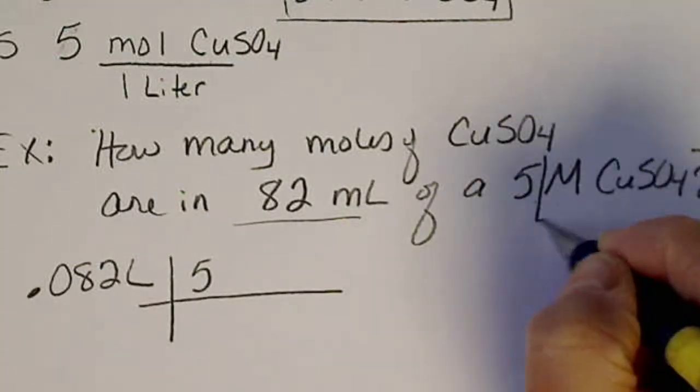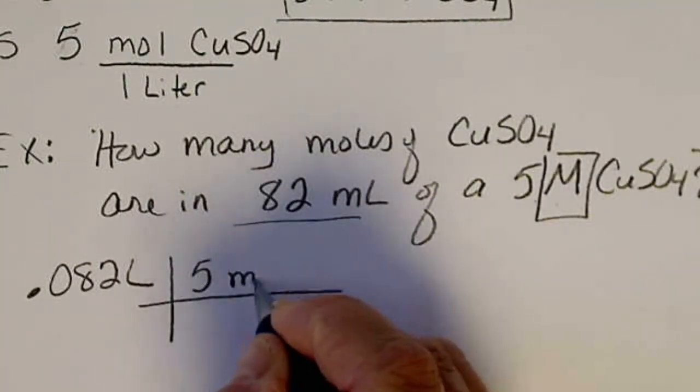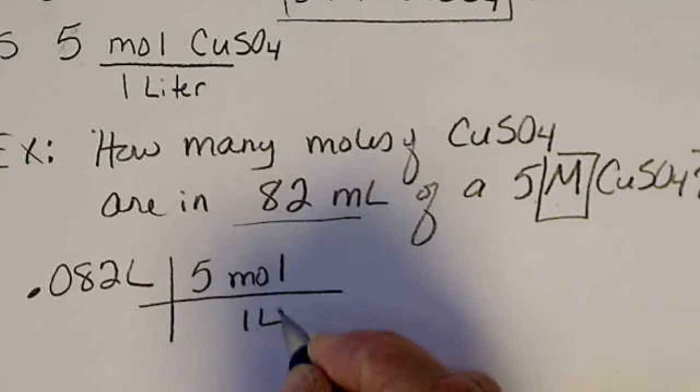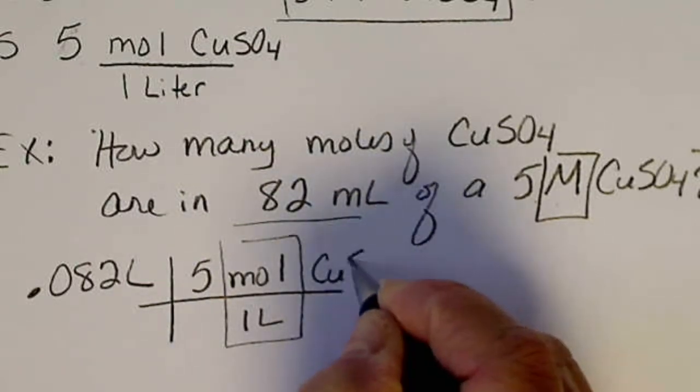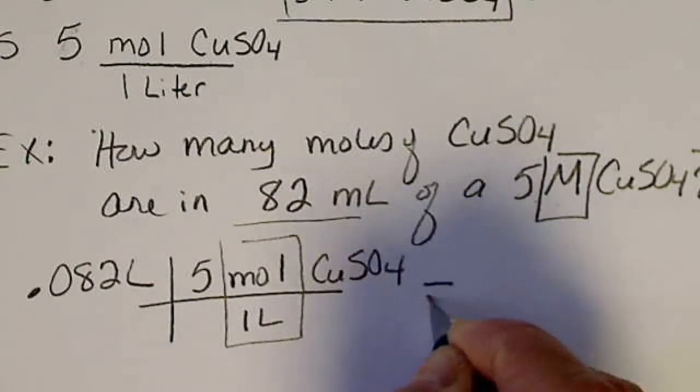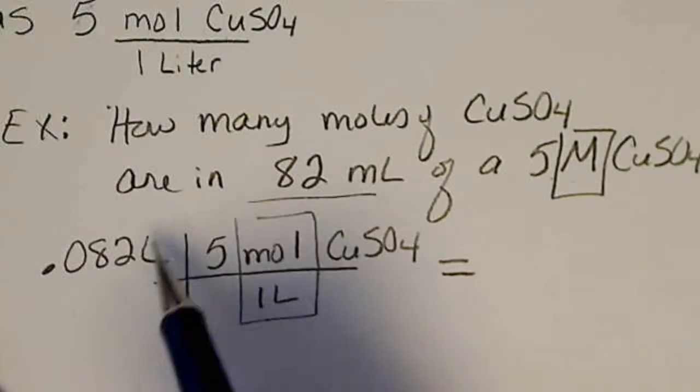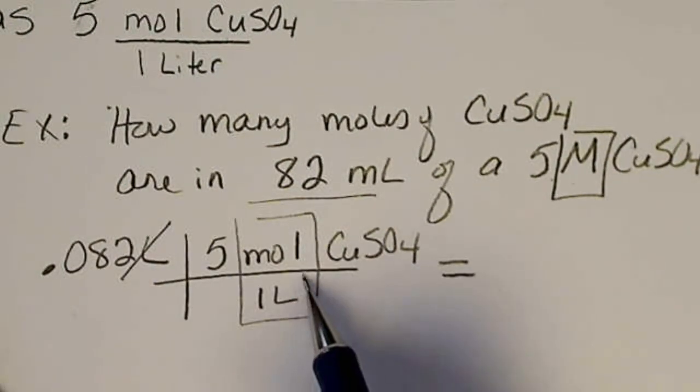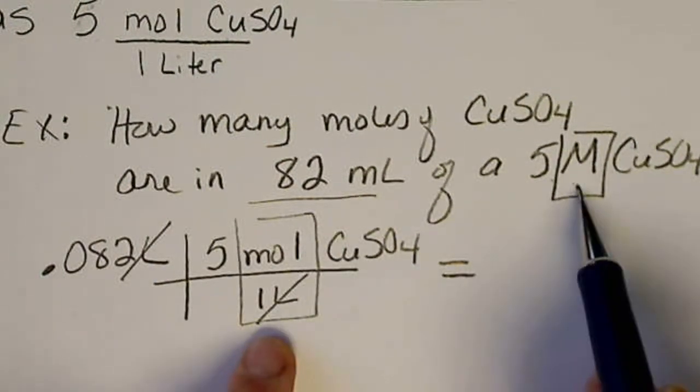So instead of writing M, I'm going to write mole per one liter, and then I'm going to write the copper sulfate. So notice our volume units cancel. That liter is built into this M.